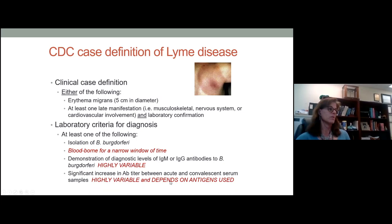Two-tiered testing for Lyme disease is the gold standard. The first test is typically an ELISA, and if there is a positive or equivocal result, it's followed up by a Western blot. If signs or symptoms have occurred for less than 30 days, both an IgM and IgG Western blot are performed, and if they've been present for greater than 30 days, just an IgG Western blot. Ironically, we know that IgM also persists, so both should probably be performed.